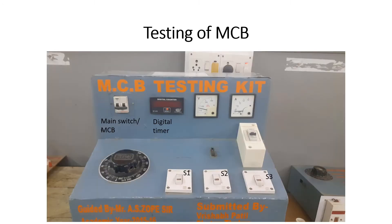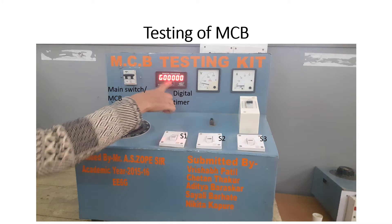For testing MCB we are going to use this testing kit which is available in our switchgear lab. The front panel of this MCB testing kit includes main MCB. This particular MCB we can have its use as a switch as well as it will work as a switchgear or protecting device. This is a digital counter which will show you the exact time after which your circuit breaker trips. This is a voltmeter, ammeter. On this ammeter you will be able to have the exact value of amount of current which is flowing through that particular circuit.